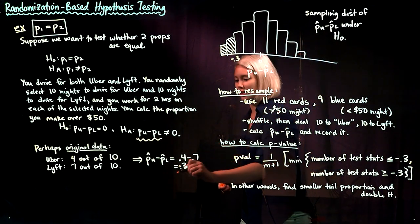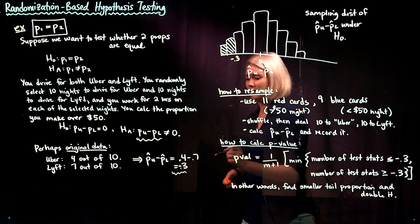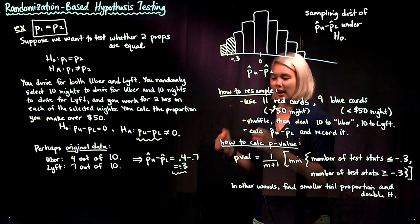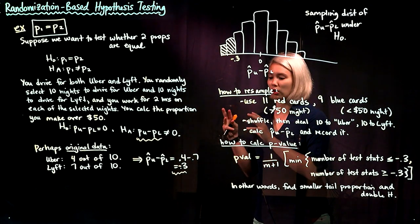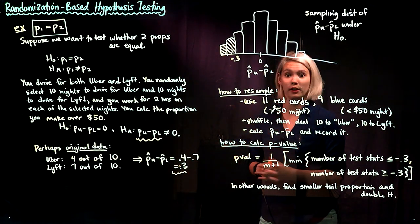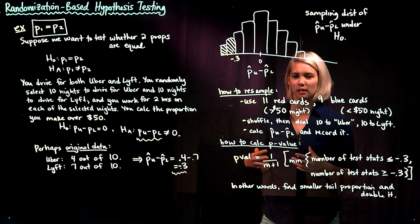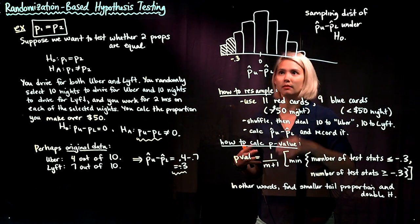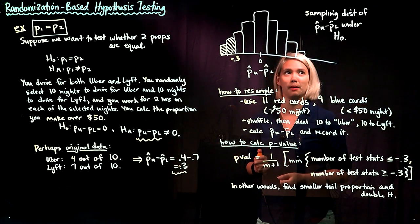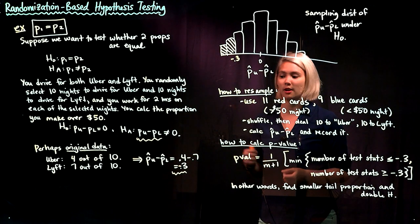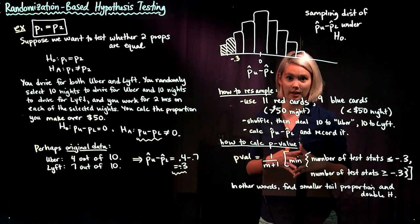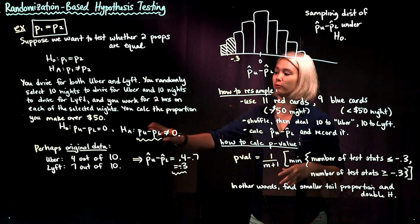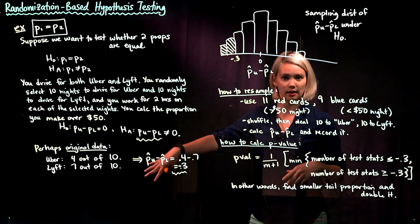So negative 0.3 is our original data's test statistic. Now we need to compare that negative 0.3 to figure out whether it is extreme or not, so we need a sampling distribution to compare it to. We have to create that sampling distribution by randomly reassigning this data.